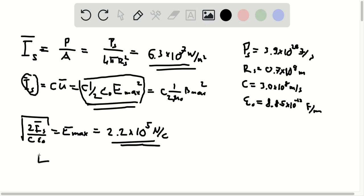And then using the fact that the electric field is related to the magnetic field by a factor of the speed of light, we can just use this value of E max to get that B max is going to be equal to E max divided by C.